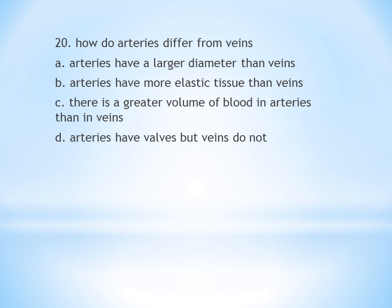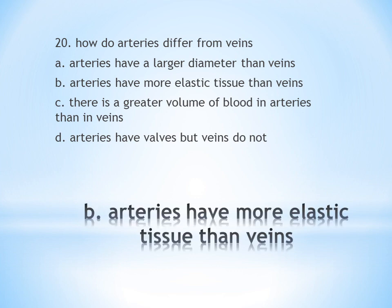Twentieth question: How do arteries differ from veins? A. Arteries have a larger diameter than veins, B. Arteries have more elastic tissue than veins, C. There is a greater volume of blood in arteries than in veins, D. Arteries have valves but veins do not. Answer is B — arteries have more elastic tissue than veins.